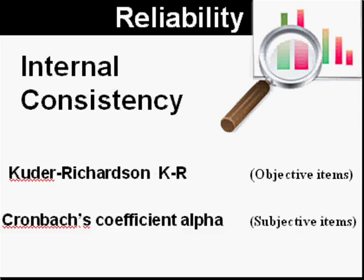For internal consistency, there are actually two statistical methods of checking it. One is the Kuder-Richardson, or KR, and is mostly used for people who are testing things on multiple choice items. Whereas Cronbach's coefficient alpha is better on subjective items.